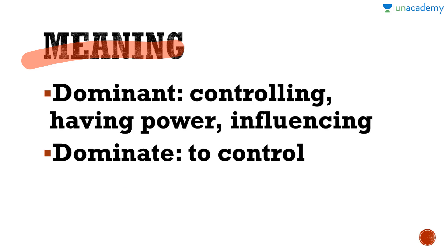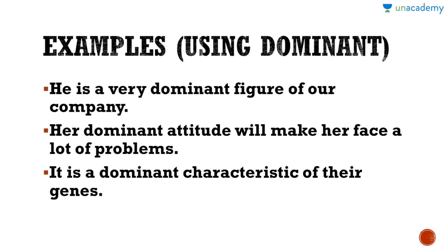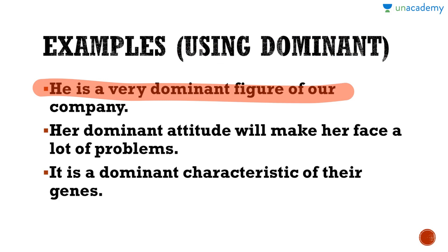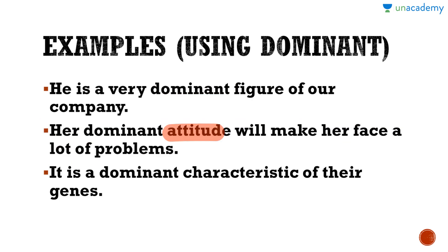Now we will discuss the meaning of DOMINANT and DOMINATE. Dominant means something that is controlling or powerful — something which is influential. Dominate means to control. Examples using DOMINANT: he is a very dominant figure of a company — meaning a very powerful figure. Her dominant attitude will make her face a lot of problems — meaning her controlling attitude, when someone tries to control the actions of other people, can become rude, and therefore cause problems.